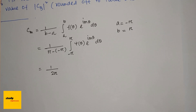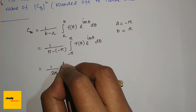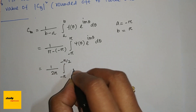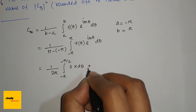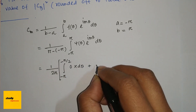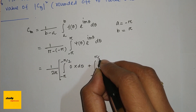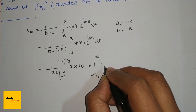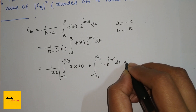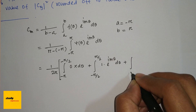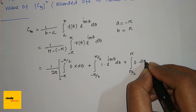Since ψ(θ) = 1 for −π/2 to π/2, we split the integral: from −π to −π/2 it is 0 · dθ, plus from −π/2 to π/2 it is 1 · e^(imθ) dθ, plus from π/2 to π it is 0 · dθ. So only the middle term contributes.